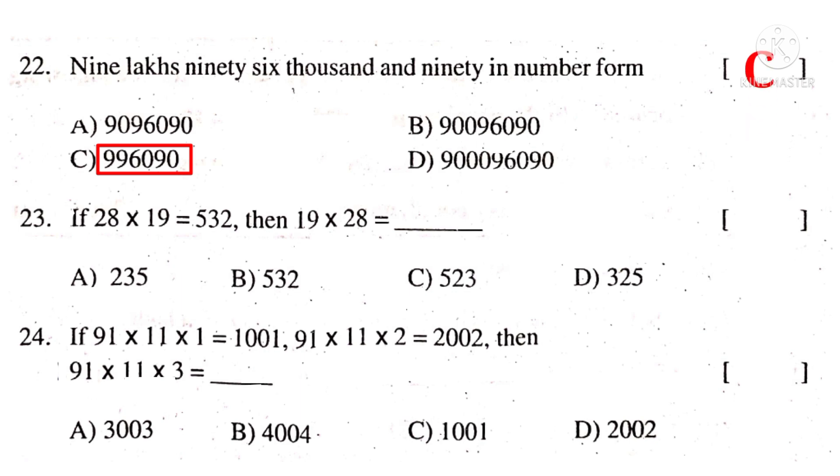If 28 into 19 is 532, then 19 into 28 is dash. Observe that 28 into 19 and 19 into 28 are just reversed, interchanged. So their product does not change using commutative property. So 532 is the product. So the correct choice is B.